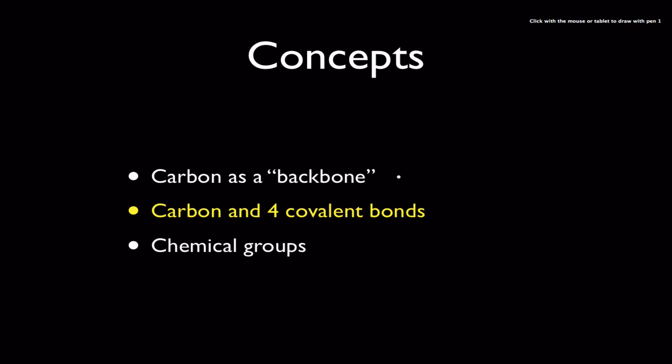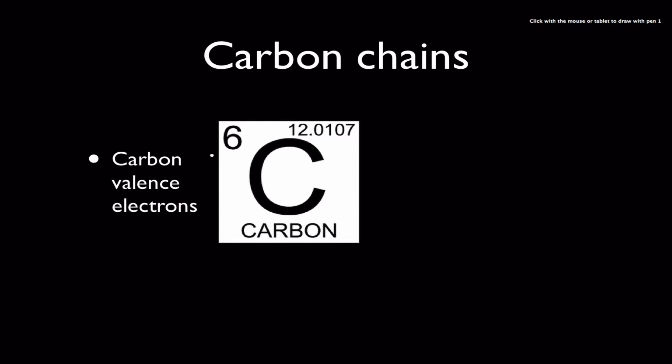The next concept I want to touch on today is why carbon does what it does and we have to go into a little bit of chemistry here. If you remember, carbon is number six on the periodic table which means carbon has six protons and six electrons. So if we go ahead and map them out here there's two in the innermost energy level and then surrounding that are the final four.